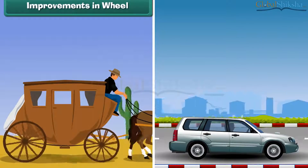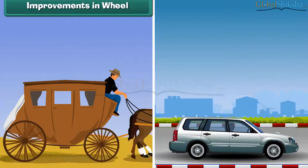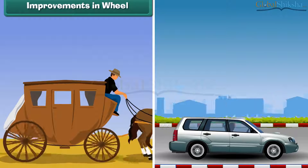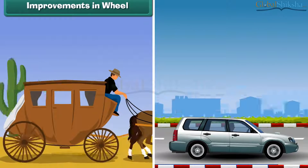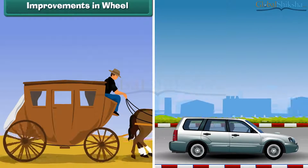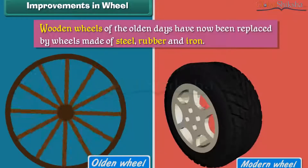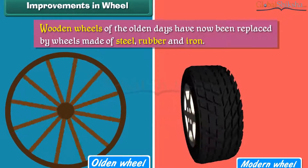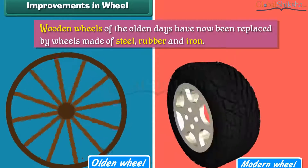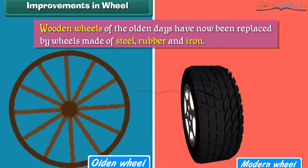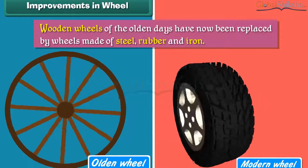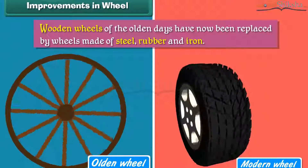Improvements in wheel. With the passage of time, wheels improved. Wooden wheels of the olden days have now been replaced by wheels made of steel, rubber and iron.